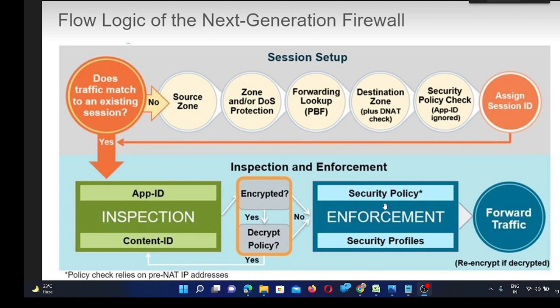Then that packet will be forwarded for security policy and profile checkup. If that packet is allowed, it will be forwarded; if denied, it will be dropped on the firewall itself. So in the slow path, we are simply creating a session ID for that packet, and in the fast path, we are verifying App-ID and Content-ID and also checking the security rules for that packet.